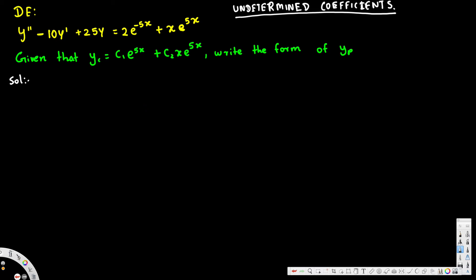Here we have a second order non-homogeneous differential equation. We're given that yc equals c1*e^(5x) plus c2*x*e^(5x), and the question asks us to write the form of yp.